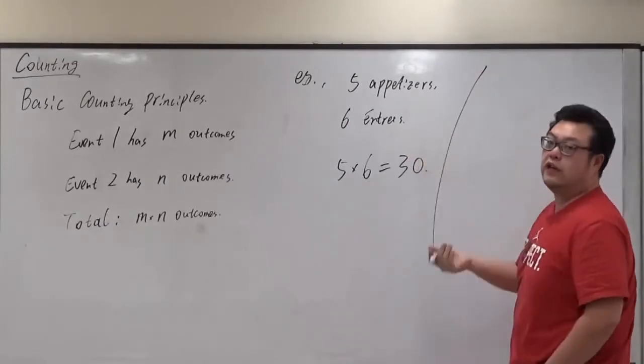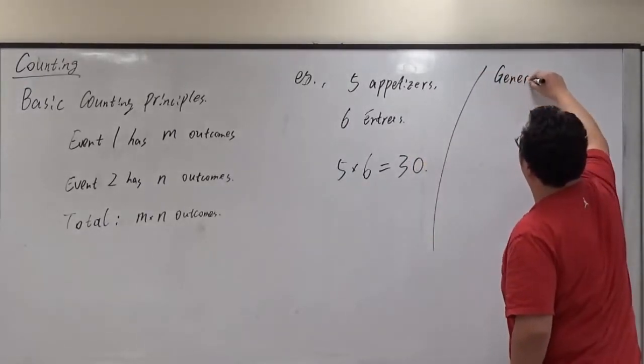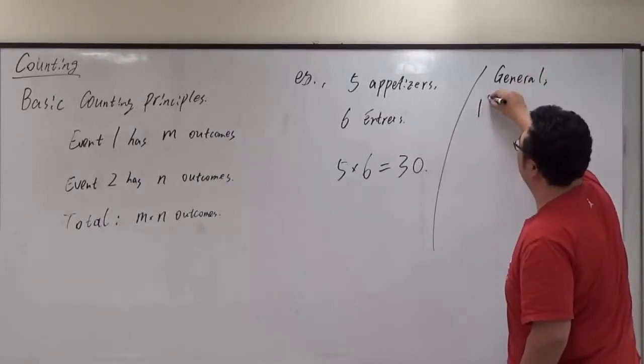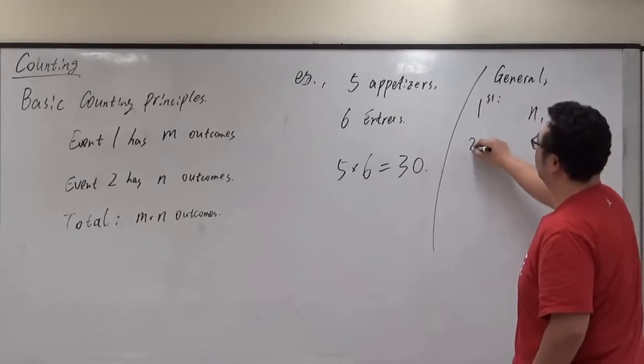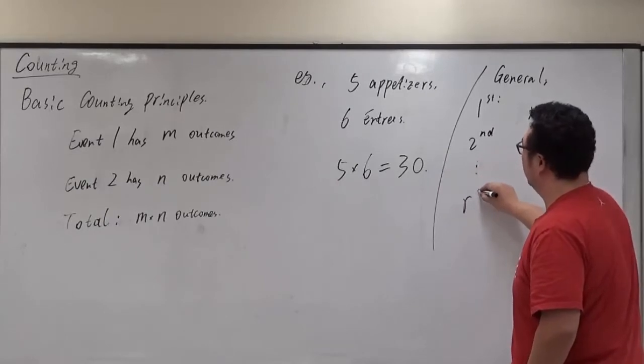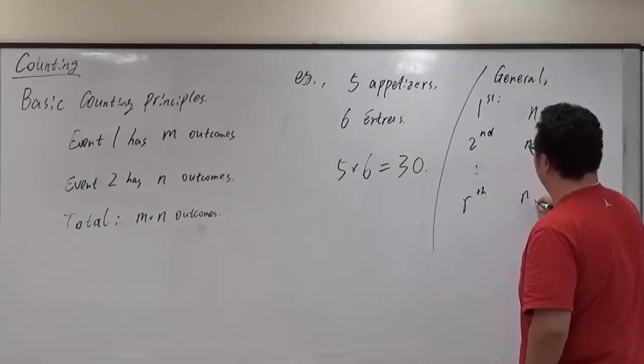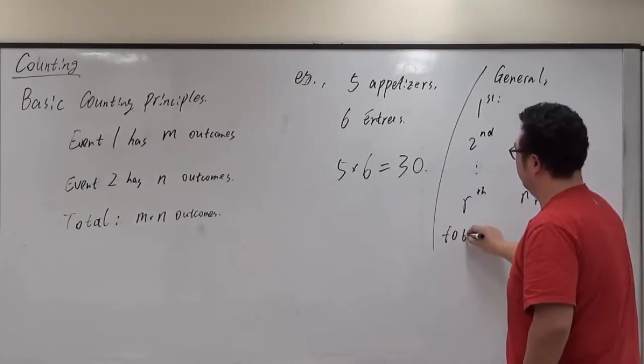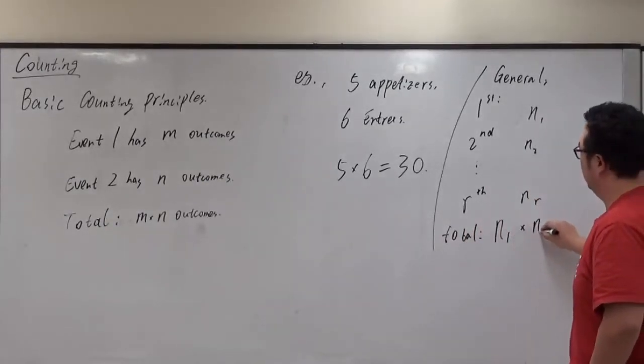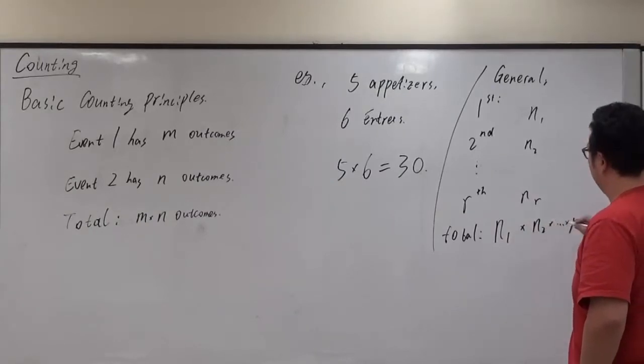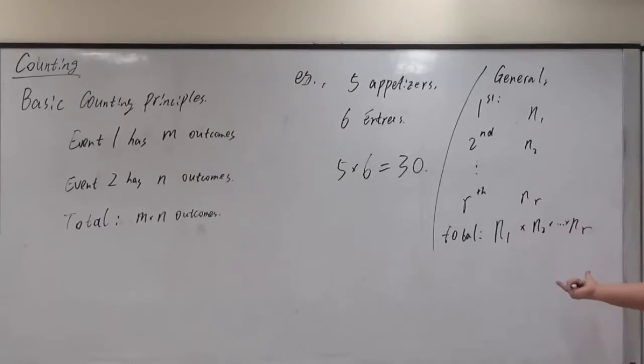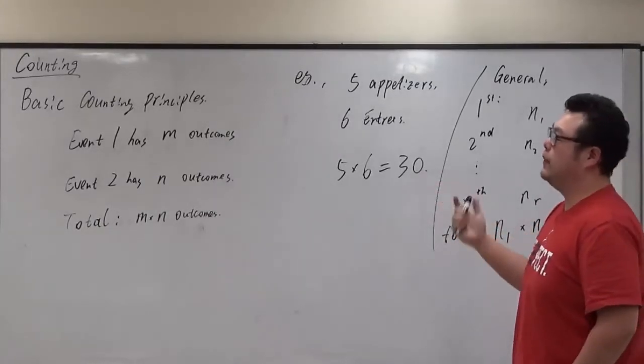But if we generalize it, if we have the first event has n one way to occur, second has n two, and if we have r different ways that's n r, then the total will still be the product of them. So that's the more generalized principle, extending from the basic.